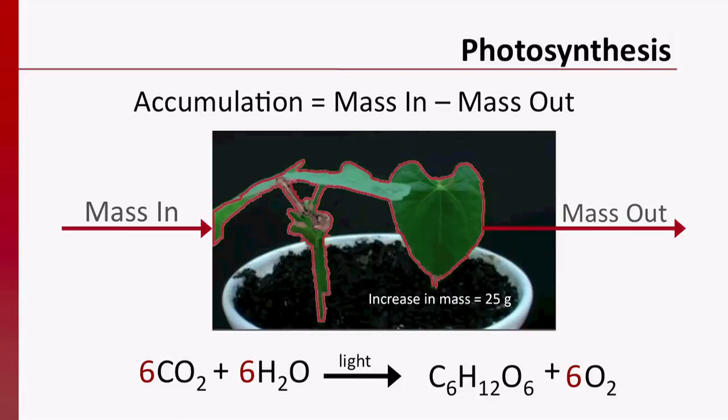What mass is entering the control volume? Carbon dioxide and water. What mass is exiting the system? Oxygen. Drawing a diagram like this helps us keep track of the information that we know and the information that we don't know. Note that we ignored the light energy because we are performing a mass balance.